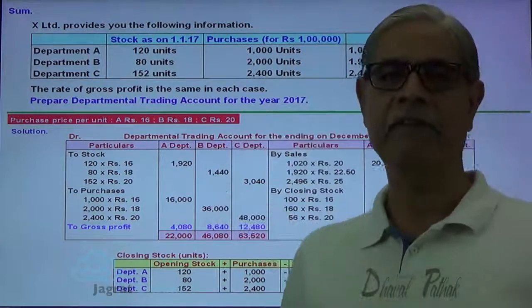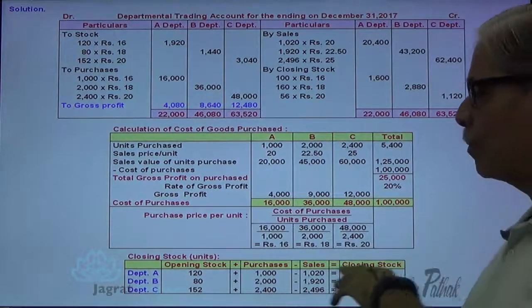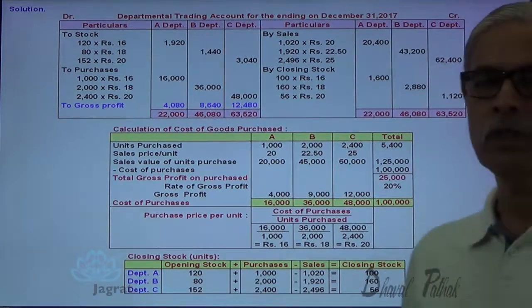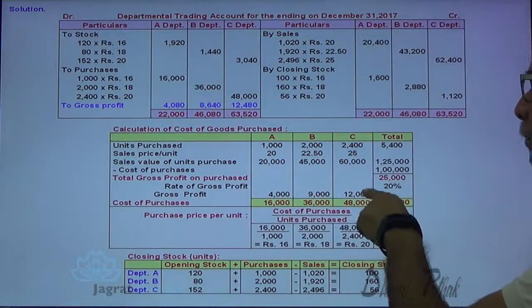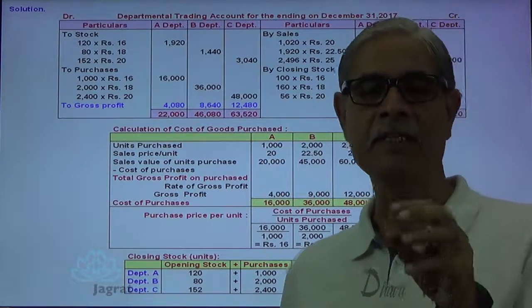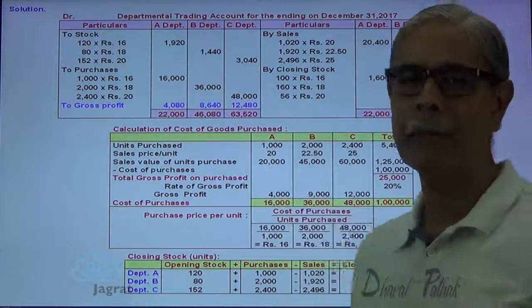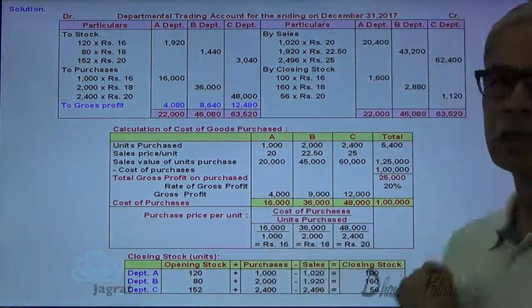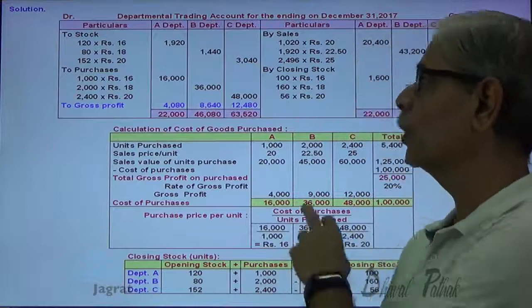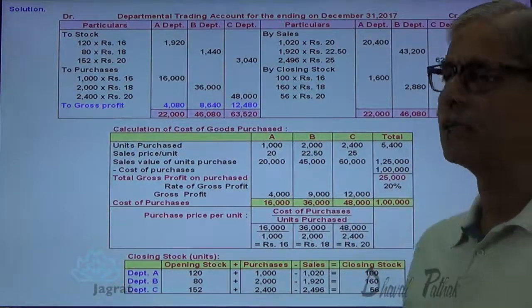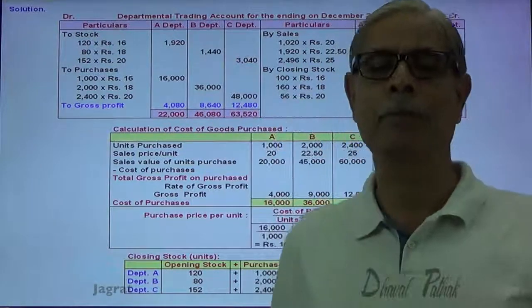Let me demonstrate the entire working with the sum on one slide. This is the trading account, this is the working note I explained, and this is the working note prepared to find out the closing stock. The most important point: the gross profit of 4,000 + 9,000 + 12,000 = 25,000 in the working note is used only to find out the purchase price per unit. This is not the real gross profit earned. For example, the actual gross profit of department C is 4,080, but in the working note we presumed all purchased units were sold.